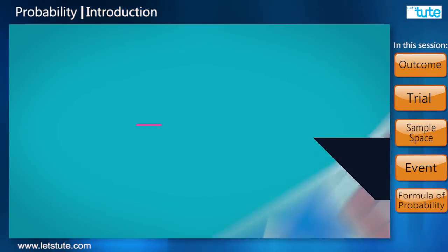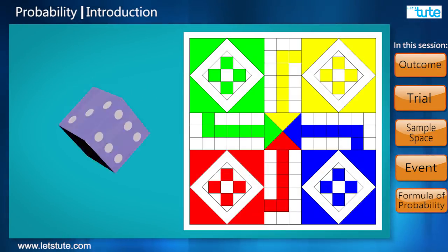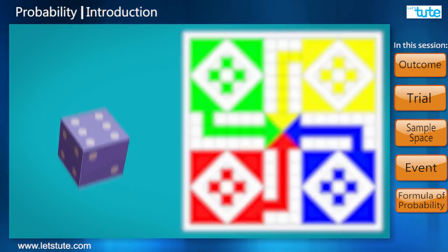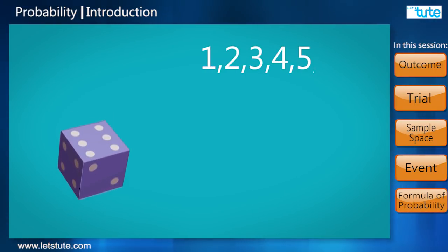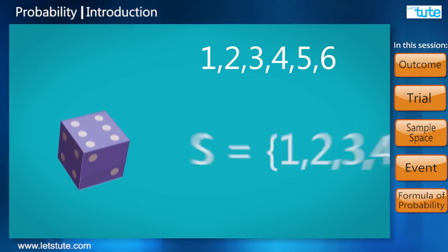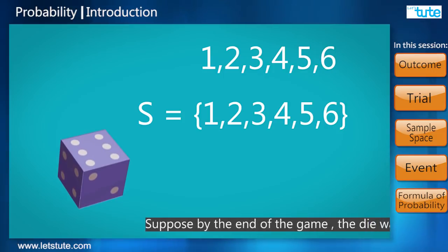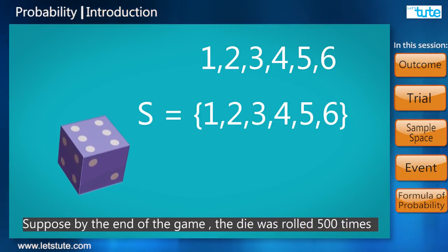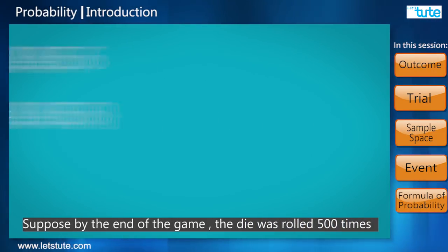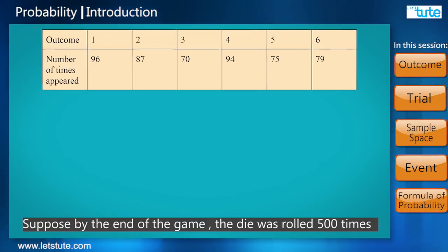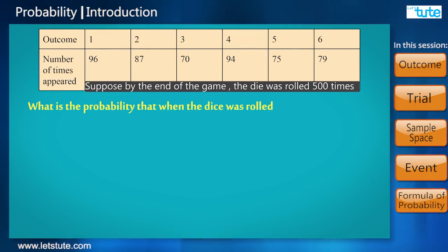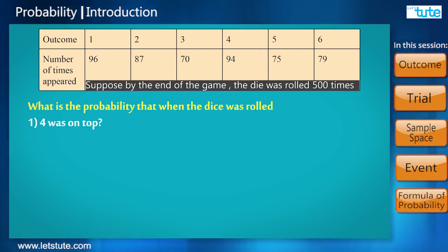In our game of Ludo, we roll the dice. Here the list of possible outcomes was S = {1, 2, 3, 4, 5, 6}, so the sample space was this. Suppose by the end of the game, the dice was rolled 500 times and the observations were recorded.